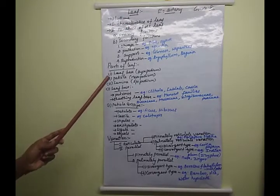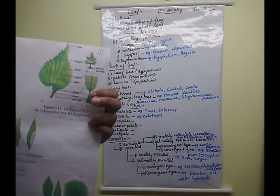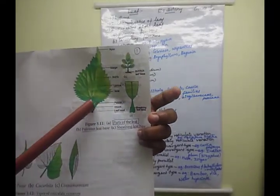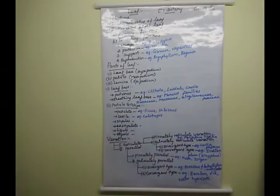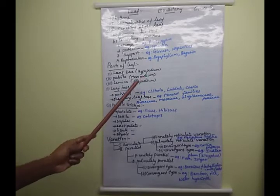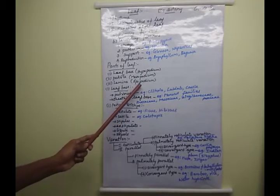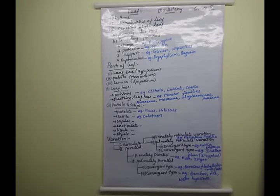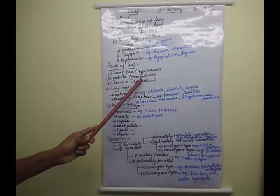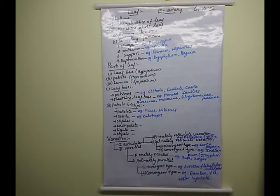Now we learn about the parts of the leaf — a very important five-mark question. The three parts are leaf base, petiole, and leaf lamina. The leaf base is called hypopodium. The petiole region is called mesopodium. The leaf lamina region is called epipodium.